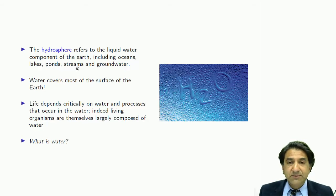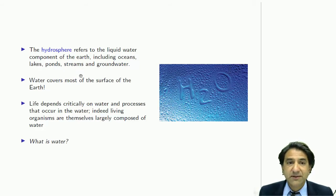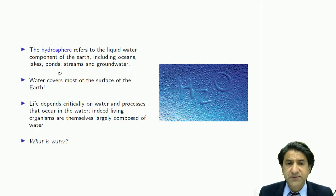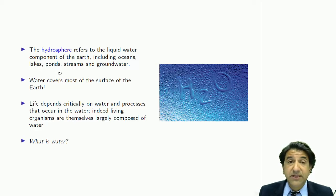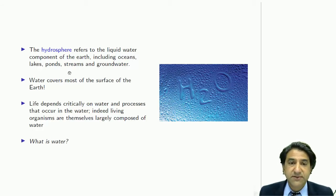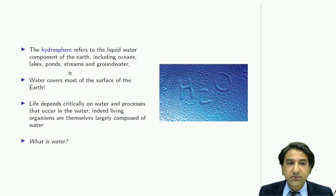The hydrosphere refers to the liquid water component of the Earth. That includes oceans, lakes, ponds, streams and groundwater, and of course clouds and other things like that. Water covers most of the surface of the Earth. It's a very unusual situation to have a planet covered in liquid, because liquids themselves are not that common — things are either solids or gas. So the hydrosphere is about water.